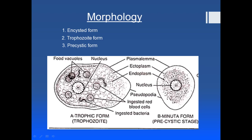Now you can see the pre-cystic form. When the trophozoite form is converting into a cystic form, it becomes a bit circular or wider in shape. There are no ingested RBCs or food vacuoles at this point, and the cyst wall has not yet been secreted. That is why it is called the pre-cystic form — once the cyst wall is secreted around it, it will be converted into the cystic form.